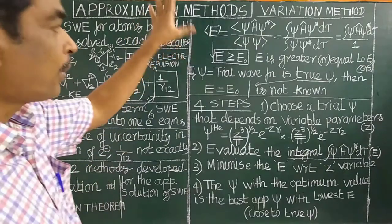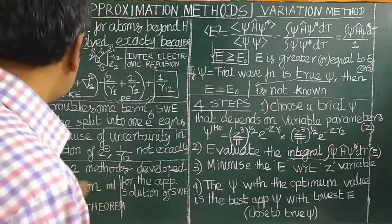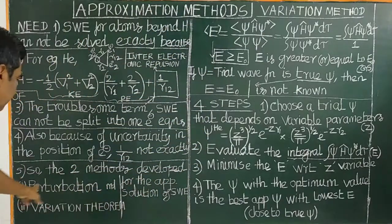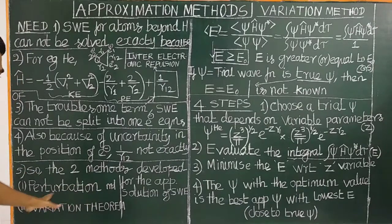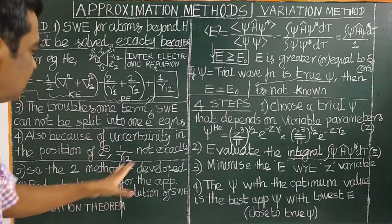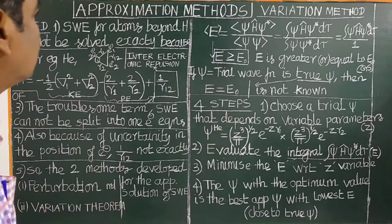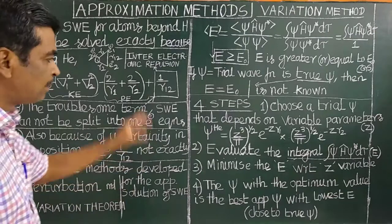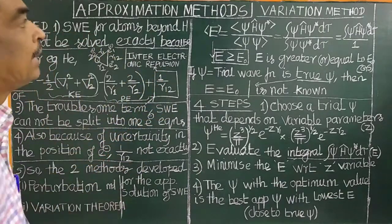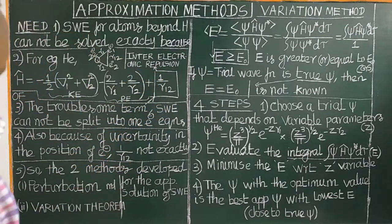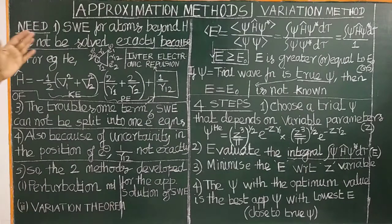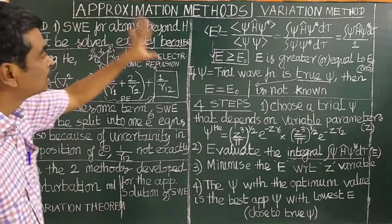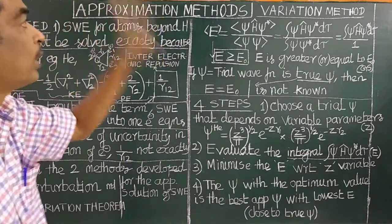There are two approximation methods. One is perturbation theory, and the other is variation theory. First, we are going to talk about the variation method. Before we study, what is the need for approximation methods in quantum mechanics?